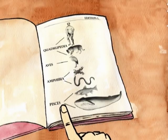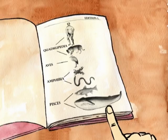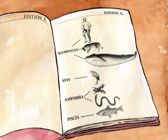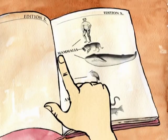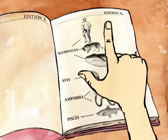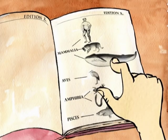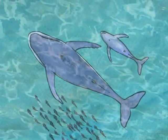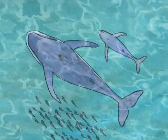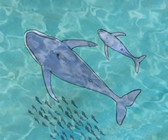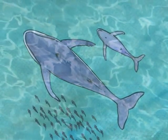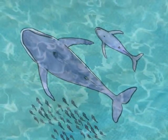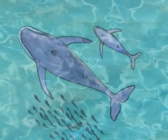In the book's first edition, Linné classifies whales within the fish group. But by the 10th edition, whales are classified with the mammals. Female whales do indeed suckle their young. And moreover, unlike the majority of aquatic animals, these giants of the ocean come to the surface to breathe.